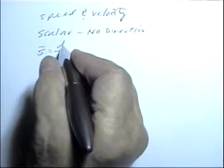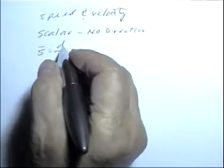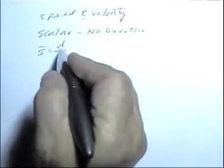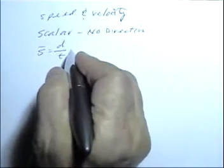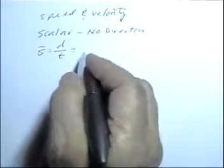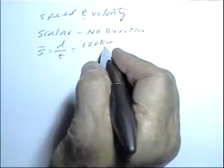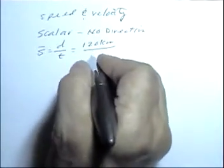in mind I said distance - that becomes important later on if you're going to understand the difference between speed and velocity. That's distance. The distance we said our car traveled was 120 kilometers. It took the car two hours to travel